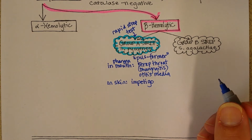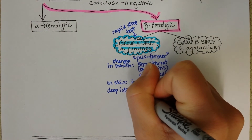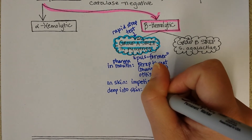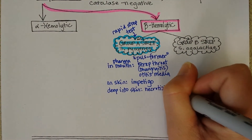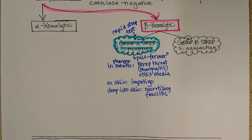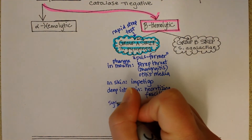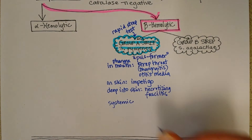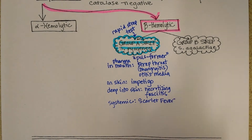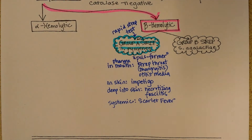If it gets deep into the skin, down into the connective tissues, it can cause necrotizing fasciitis — what some people call the flesh-eating disease. And also if it's systemic, some of the toxins can cause scarlet fever. So there are a variety of diseases that can be caused by Streptococcus pyogenes, and this is not even all of them.